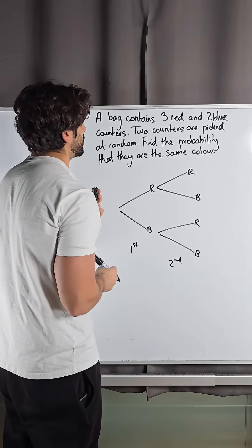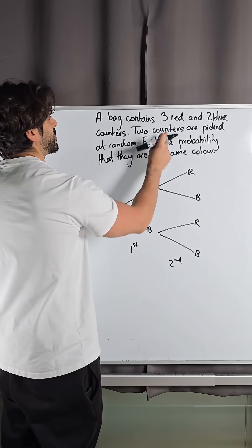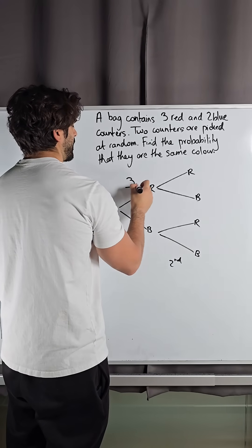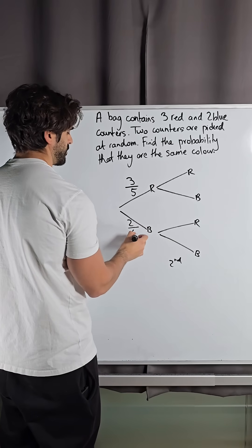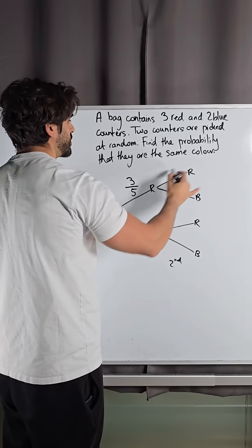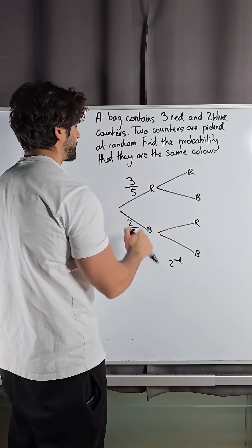So the probability of choosing a red initially is three reds out of five in total. The probability of choosing blue is two out of five. Always do the same branches first.